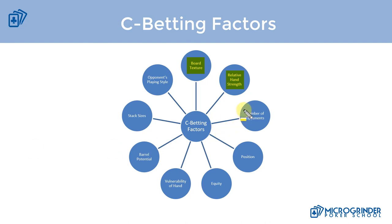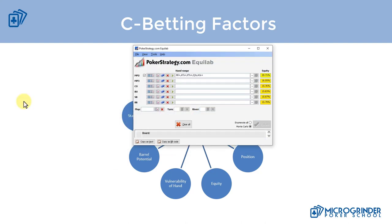The next factor is number of opponents, which plays a role for a couple of reasons. It affects the equity of our hand and whether we can value bet, and it goes hand in hand with relative hand strength. It also plays a role in something called combined fold probability, which determines whether we can bluff or not. To help understand this, I'm going to pull in Equilab. The first concept I want to discuss is diminished equity, something I coined in my book Master Micro Stakes Poker.